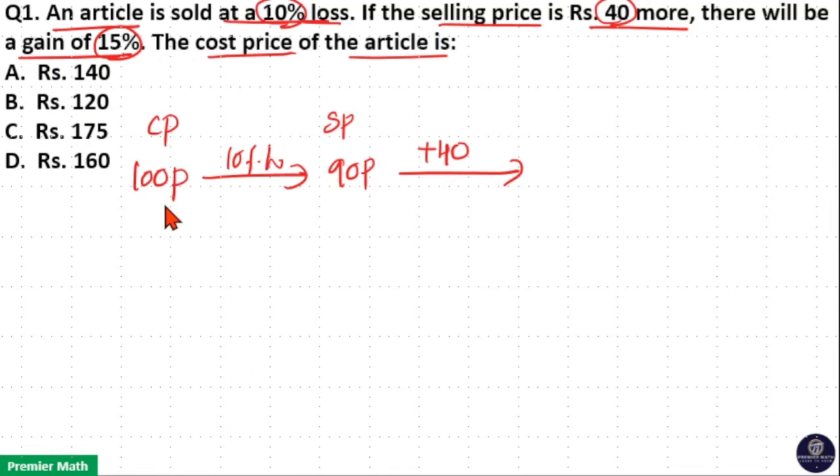Now gain of 15% means gain is always calculated upon the cost price. So 15% means 100 plus 15. 115 is the new selling price, 115 parts.